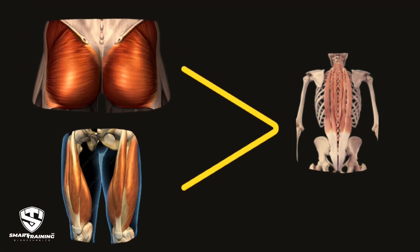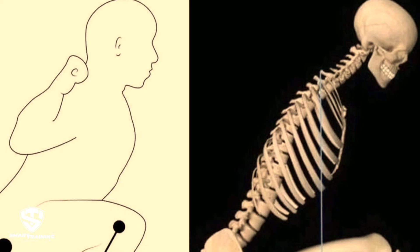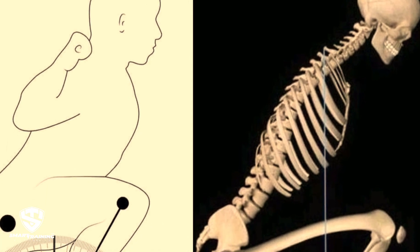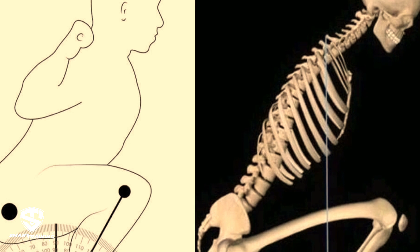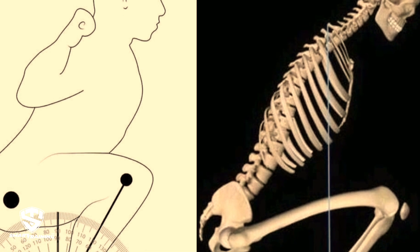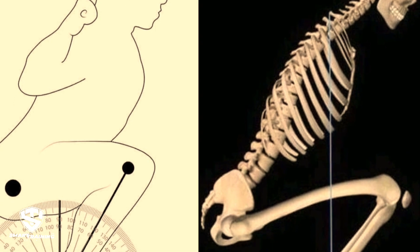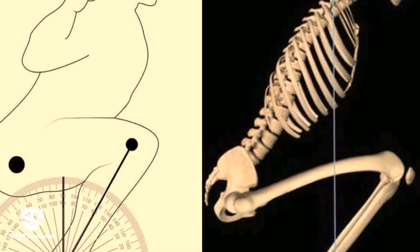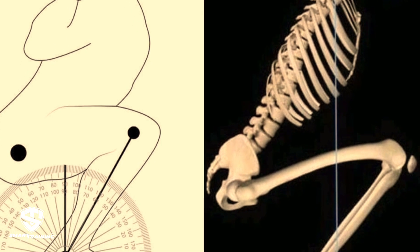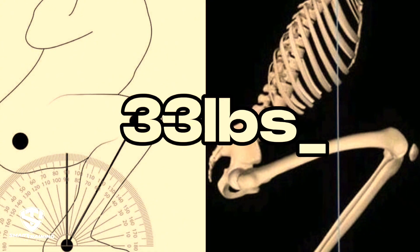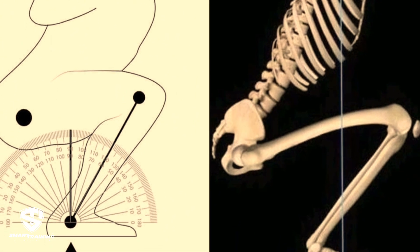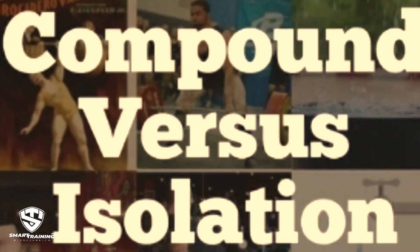So the weak link in the chain is the erector spinae. Here's why this is bad news: due to the angle of the torso and the tibia during the squat, the quads are only getting about 33% of the load used — meaning about 33 pounds of the 100 pounds. This is explained in greater detail in our free webinar, Compound Versus Isolation — link in description.